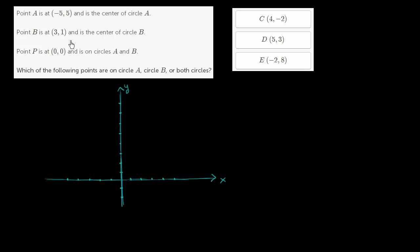Point A is at negative 5 comma 5. So this is negative 5 right over here, and counting up to 5, that's 5 right over there. So point A is right about there — at negative 5 comma 5. And it's the center of circle A, which I won't draw just yet because I don't know the radius of circle A.